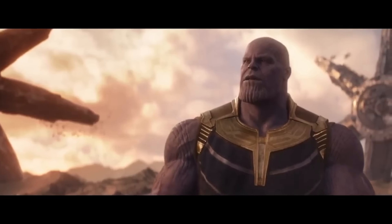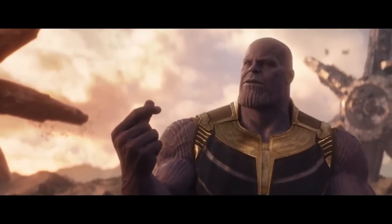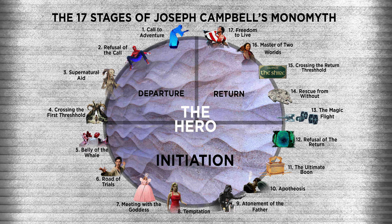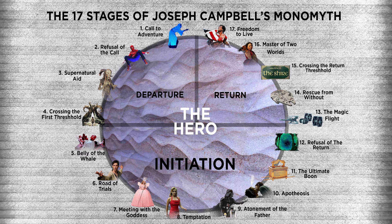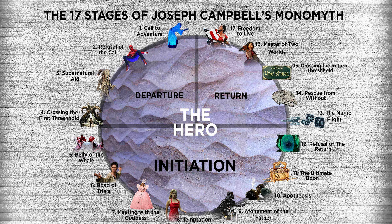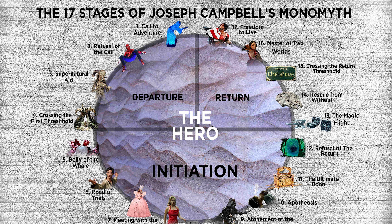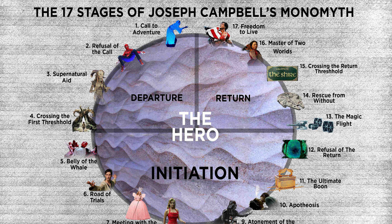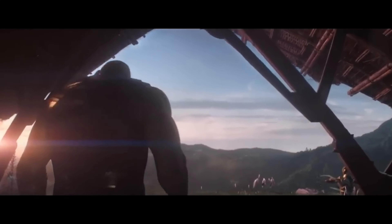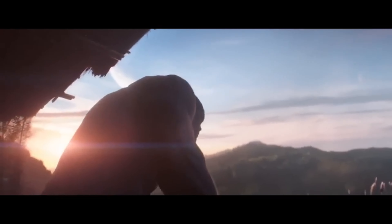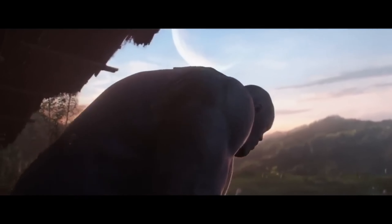Thanos' story follows the hero's journey in inverse. In the hero's journey, there is a sickness in the world and the hero takes on a task and goes on a journey to transform the world and themselves. According to Thanos, the world is sick — too many lifeforms for it to sustain — so Thanos searches to complete the Infinity Gauntlet to solve the problem.